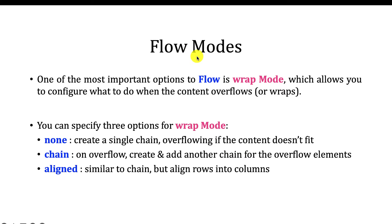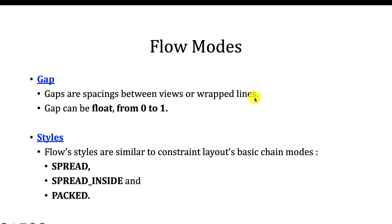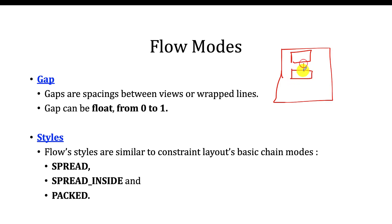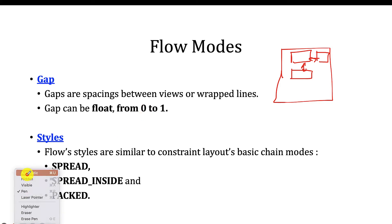First let's discuss the various modes of Flow and then go to the demo. One of the most important options of Flow is wrap mode — the three possible options are none, chain, and align. Next is gap — gaps are the spacing between views or wrapped lines. You can imagine a gap as the space between two views in a container. The gap value is always between 0 and 1.